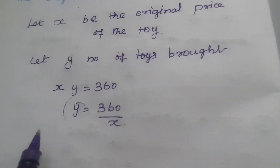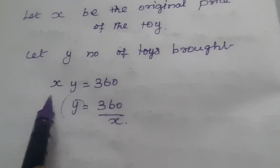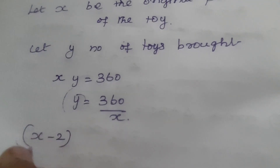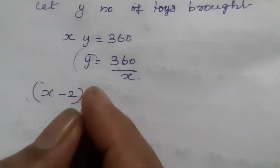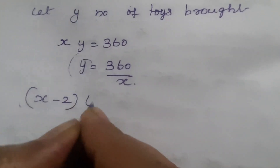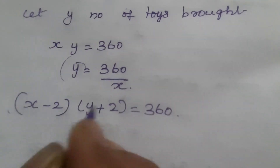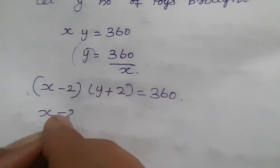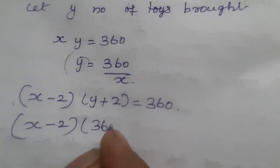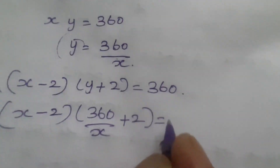Next, what is given? The least price of a toy is reduced by Rs. 2, so from the original price it is reduced by 2, giving X minus 2. And the number of toys is 2 toys more, so number of toys brought is Y plus 2, equal to 360. Now, X minus 2 into, in the place of Y you have to replace by 360 by X, plus 2 equal to 360.